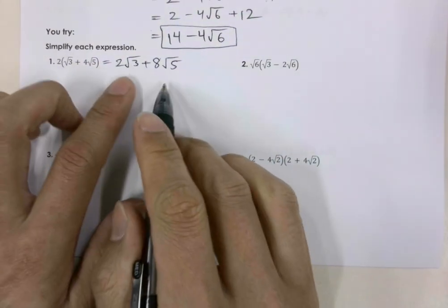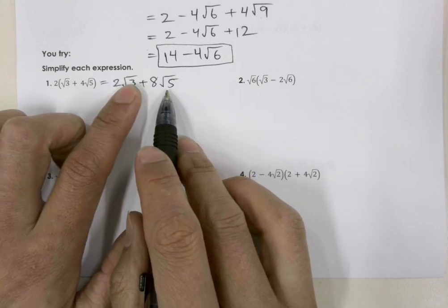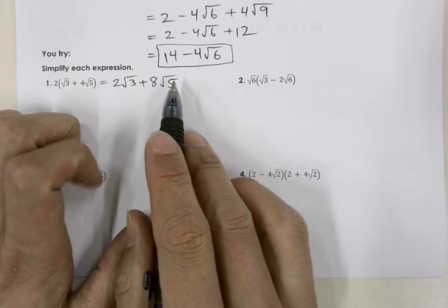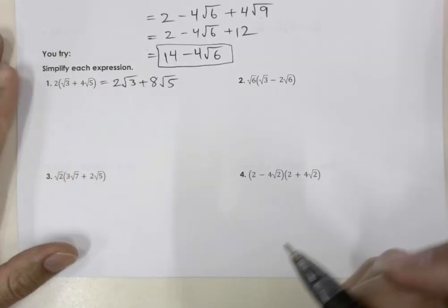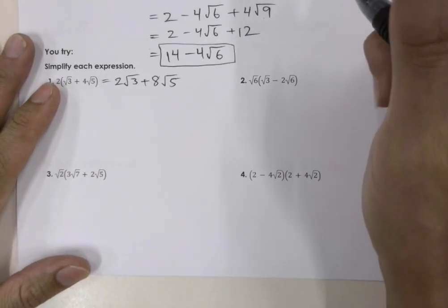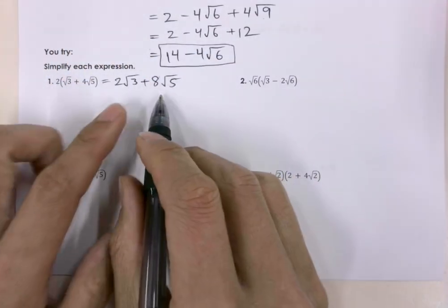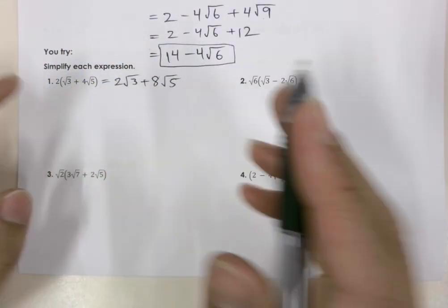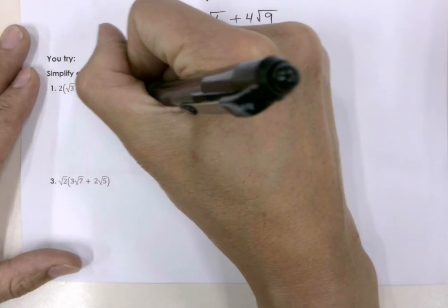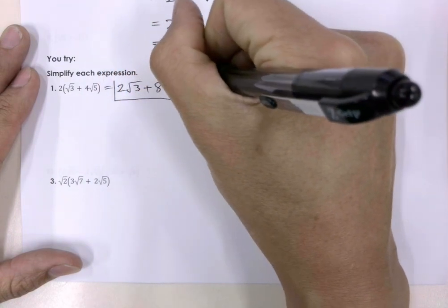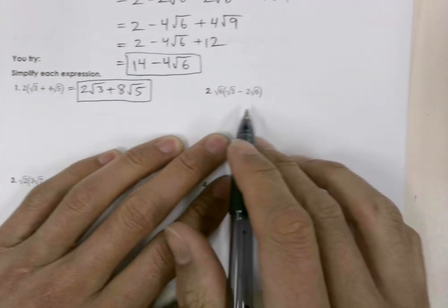We cannot simplify these anymore, because 3 is a prime number and 5 is a prime number. We cannot turn them into their prime factorizations, and so they are not like terms. So that is going to be our final answer for number 1.